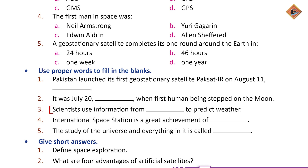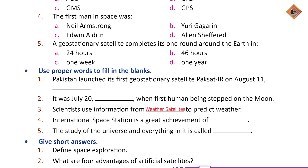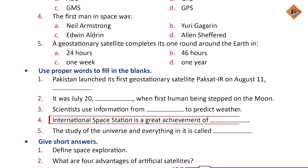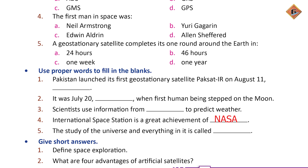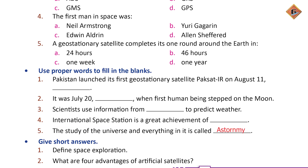Scientists use information from weather satellites to predict weather. The International Space Station is a great achievement of NASA. The story of the universe and everything in it is called Astronomy.